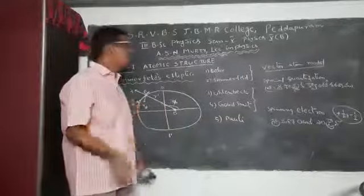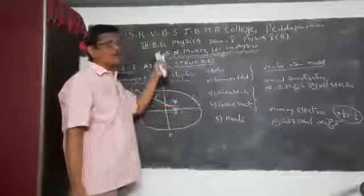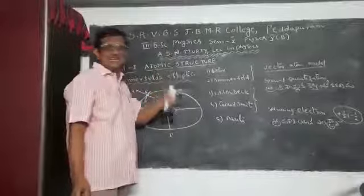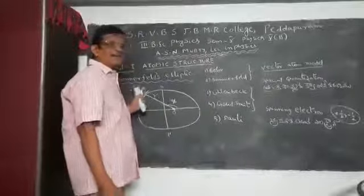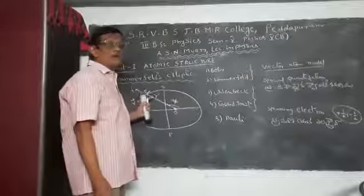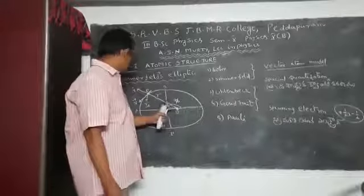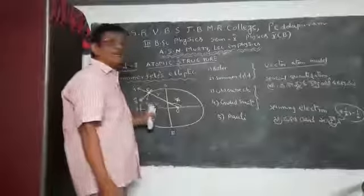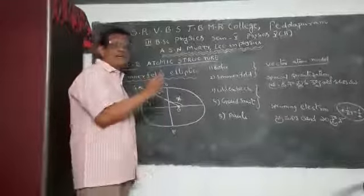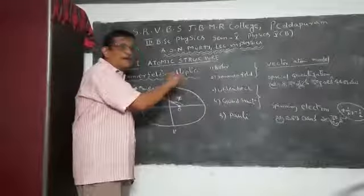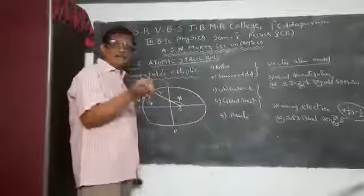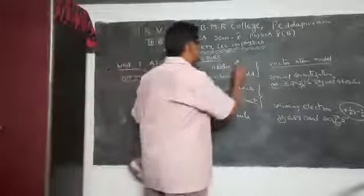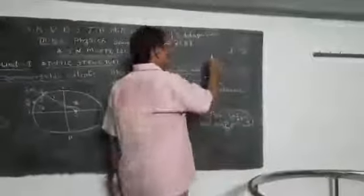The first quantum number is the principal quantum number n, from Bohr's condition. The second is the orbital quantum number from Sommerfeld's elliptical orbits, arising from the radius vector giving orbital angular momentum L. Due to electron spin, there is also spin angular momentum S. The sum of these two gives the total angular momentum J, which equals L plus S.